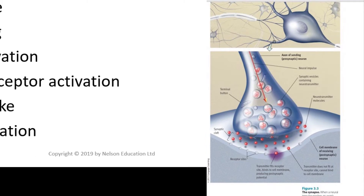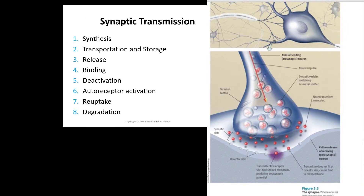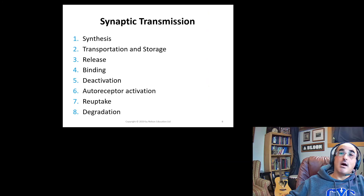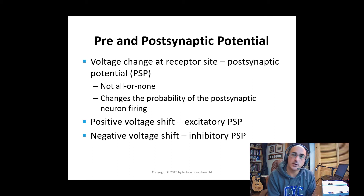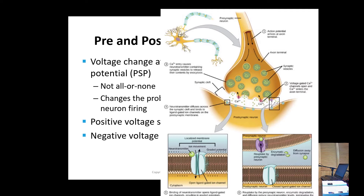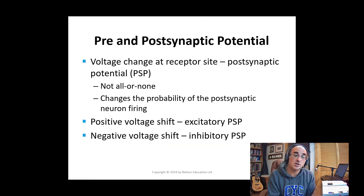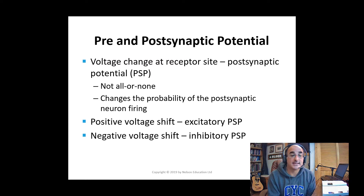The neurotransmitters diffuse across the space where they find an open receptor site on the post-synaptic neuron. These sites recognize and respond to some neurotransmitters but not others. When a neurotransmitter from a presynaptic neuron crosses the synapse, finds an appropriate receptor site on the post-synaptic neuron, and binds, a voltage change occurs. This voltage change is not an all-or-nothing situation — instead it changes the probability or potential that the post-synaptic neuron will fire, and is called the post-synaptic potential.